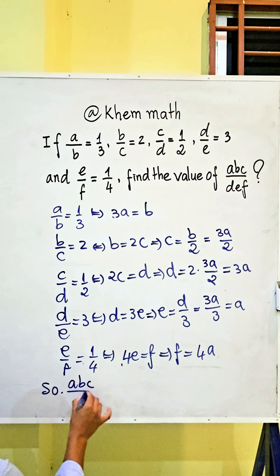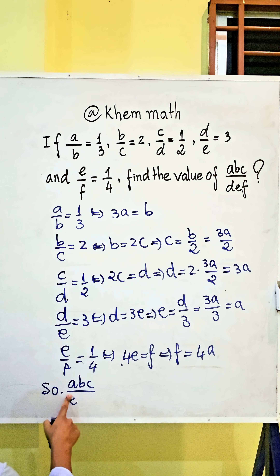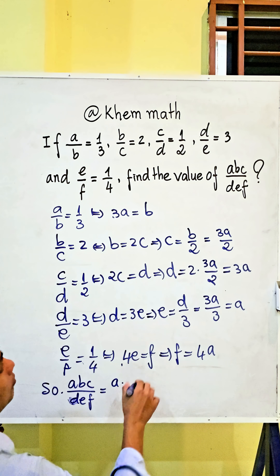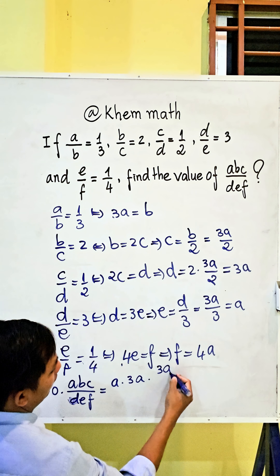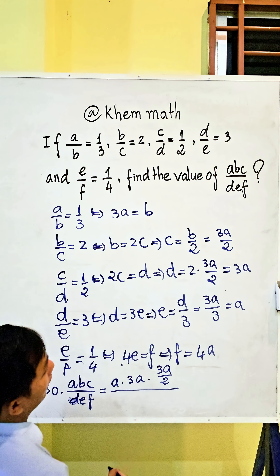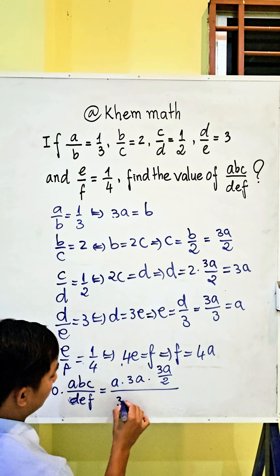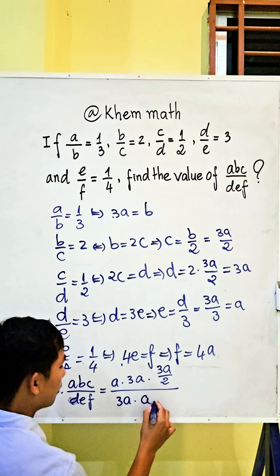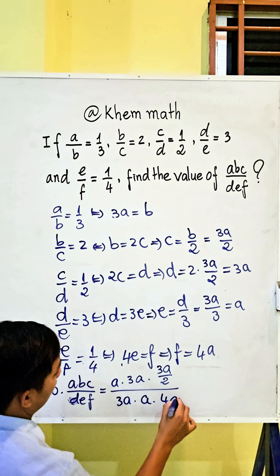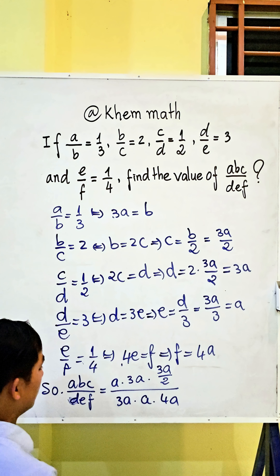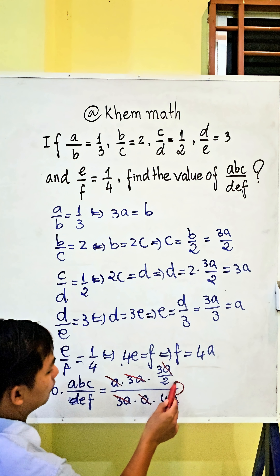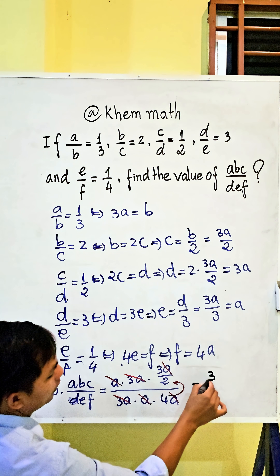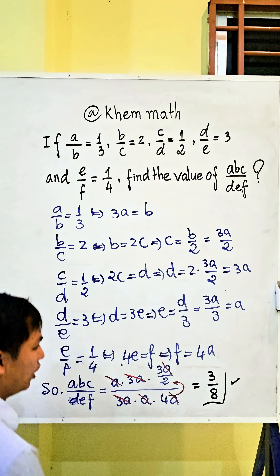Now we find abc divided by def. Substituting: a times b equals 3a, c equals 3a divided by 2, d equals 3a, e equals a, and f equals 4a. Simplifying, 3a with 3a cancels, and a divided by a cancels, so we get 1 divided by (4 times 2), which equals 3 divided by 8. That is our answer.